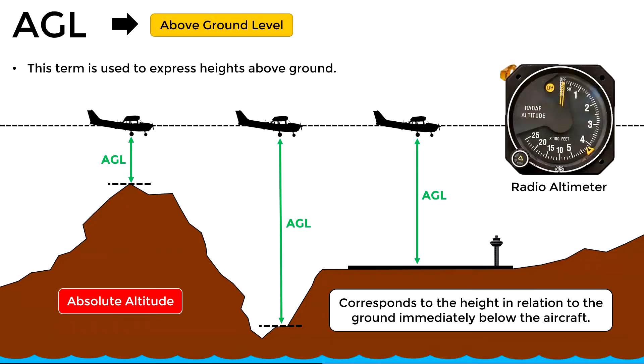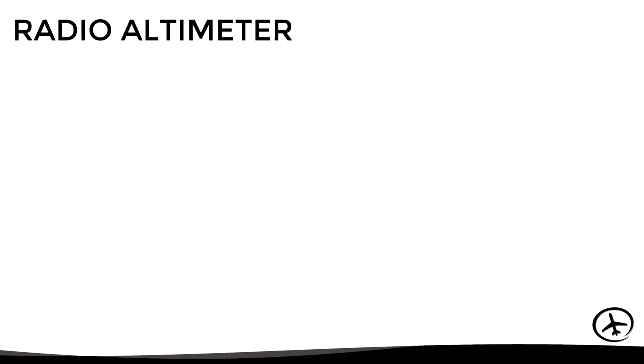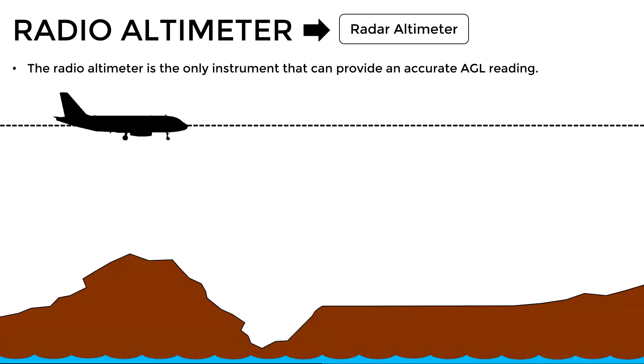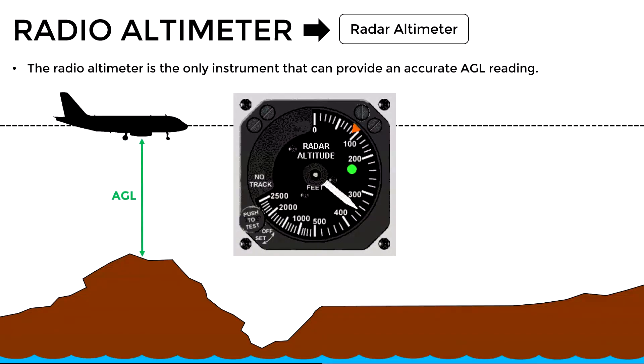This term is sometimes referred to as absolute altitude and can be measured by means of a radio altimeter. The radio altimeter or radar altimeter is the only instrument that can provide an accurate AGL reading in real time. It emits radio waves vertically to the ground where they impact and bounce back to the aircraft. Based on the time it takes for a wave to go and return is how the current AGL height is determined and shown in the instrument.